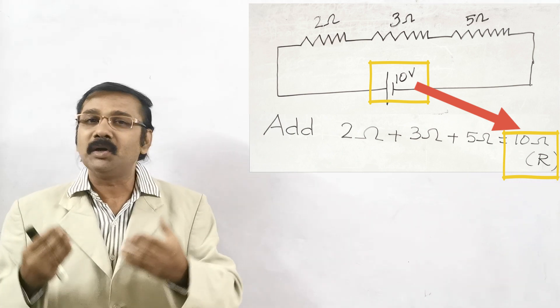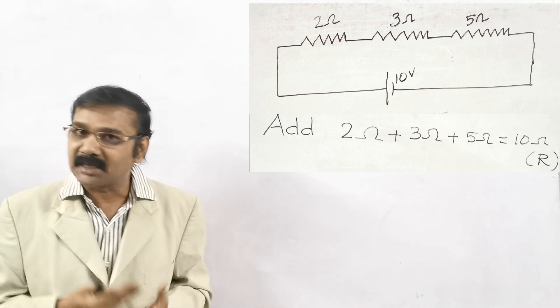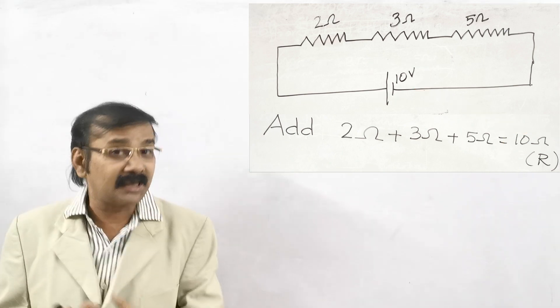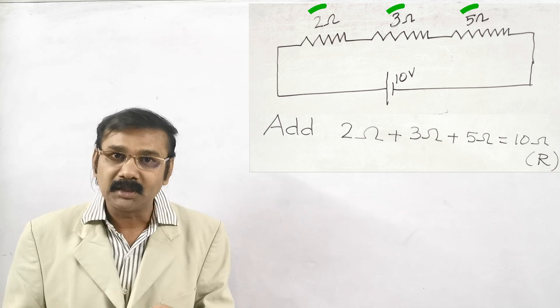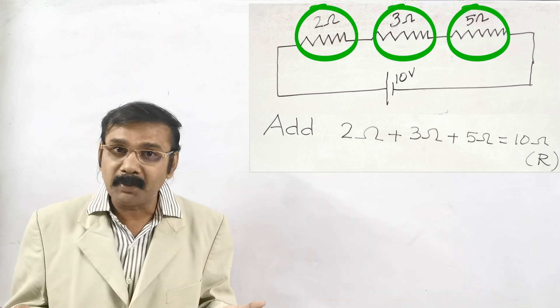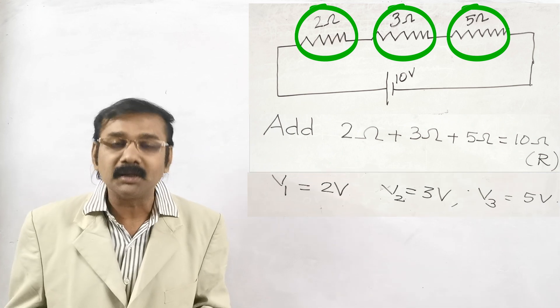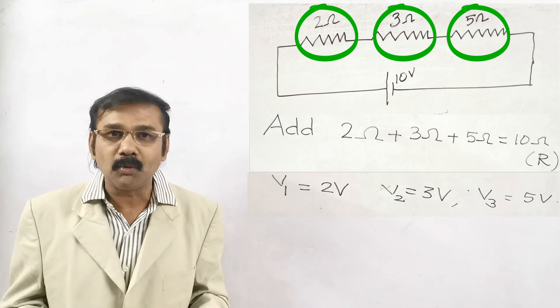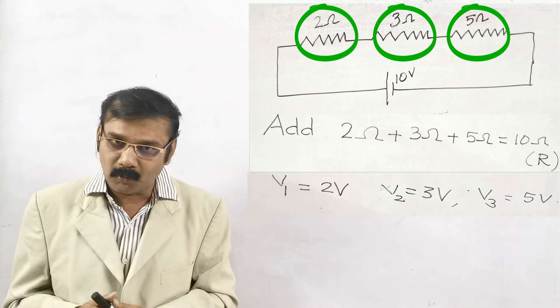And to go with the voltage, there is no need for the calculation. You see the circuit diagram. What are the three numbers, three resistances we are having? One is 2, the other one is 3, the other one is 5. Then your answer will be V1 equals 2 volt and V2 equals 3 volt and finally V3 is 5 volt.